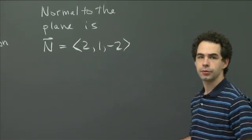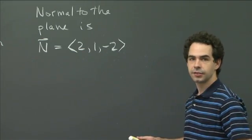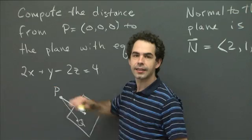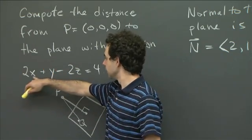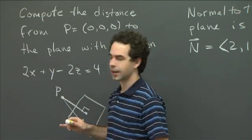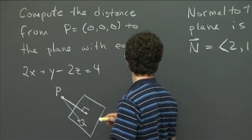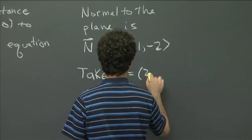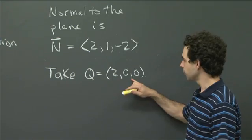So we just have to find a point Q and compute a component. We need any point on the plane. To find a point on the plane, we can do this by looking at the equation. You pick a variable that appears in the equation — x appears in the equation — and set all the other variables equal to 0. That gives you something you can solve for x. In particular, there's a point on this plane with y = z = 0, and that point has 2x = 4. So we can take Q to be the point (2, 0, 0). This is our point on the plane.